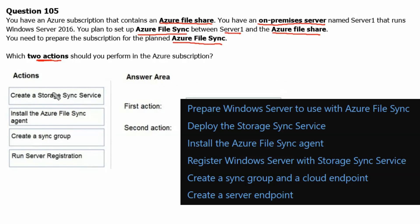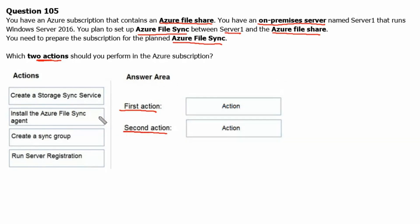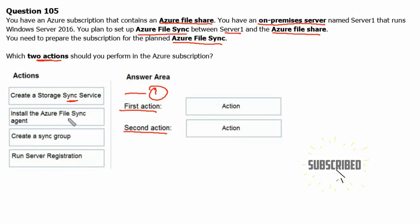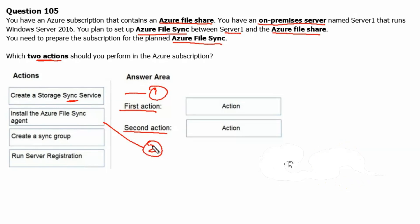From the given items, we need to choose the first and second action items for the Azure subscription. The first action item would be create storage sync service, and the second action item would be install the Azure file sync agent. Later on, we can create a sync group and register servers.